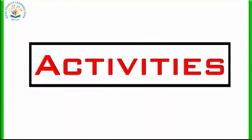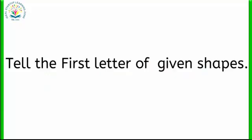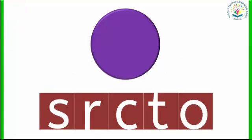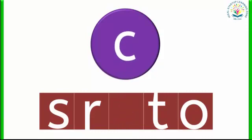Students, it is time for activities! Let's start. You will tell the first letter of the given shapes. Which shape is this? Yes, this is a circle. And what is the first letter of circle? You can choose from the given options. The first letter of circle is C. Very good!